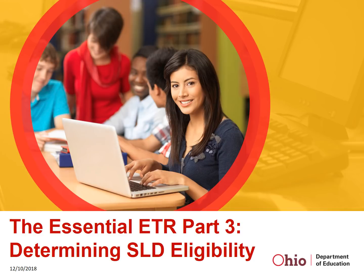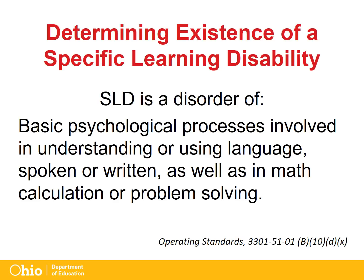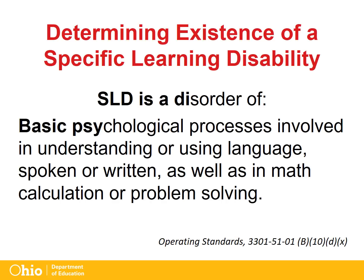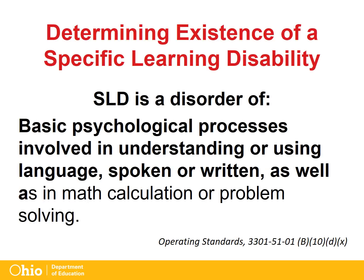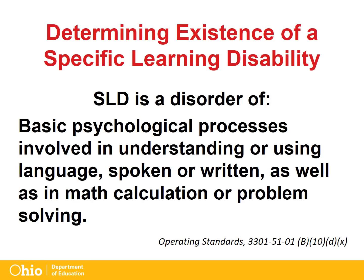This is Part 3 of the School Aged Essential ETR module. This presentation covers the additional steps and requirements of establishing the presence of a specific learning disability. Part 3 of the Evaluation Team Report documents the requirements for determining the existence of a specific learning disability. The portion of the operating standards addressing specific learning disabilities must be used and referenced when a specific learning disability is suspected or is being reviewed for a re-evaluation.